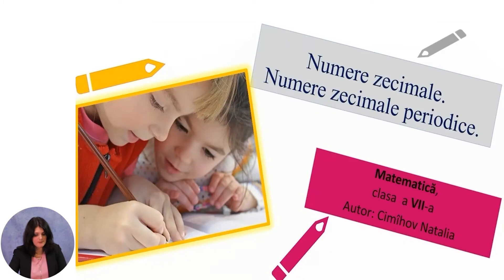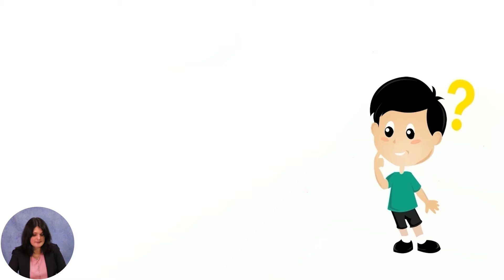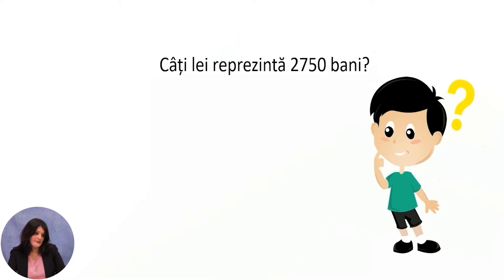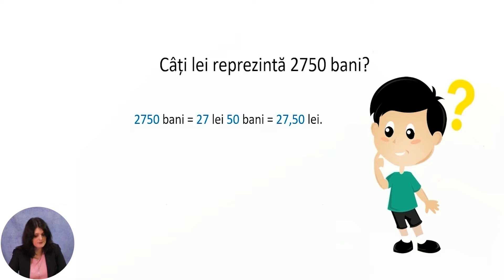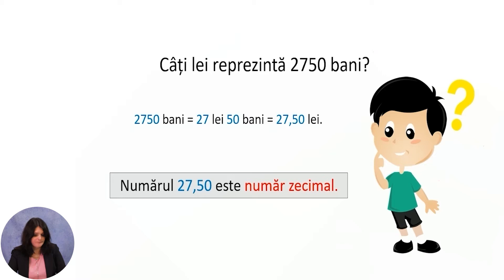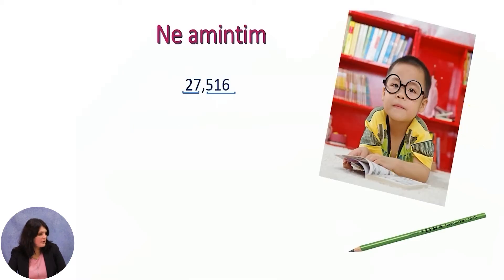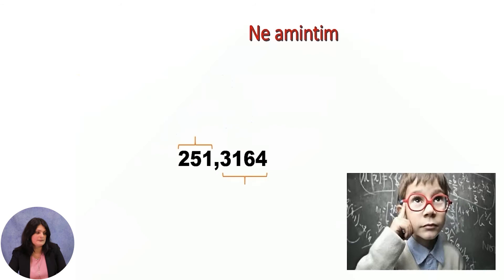Good morning everyone and welcome to a new lesson of Mathematics. Today we'll revisit and deepen the last lesson. How many money represents 2,750 bani? 2,750 bani represents 27.50 lei. Number 27.50 is a decimal number. Number 27.516 is composed of 27 as the integer part and 516 as the decimal part.